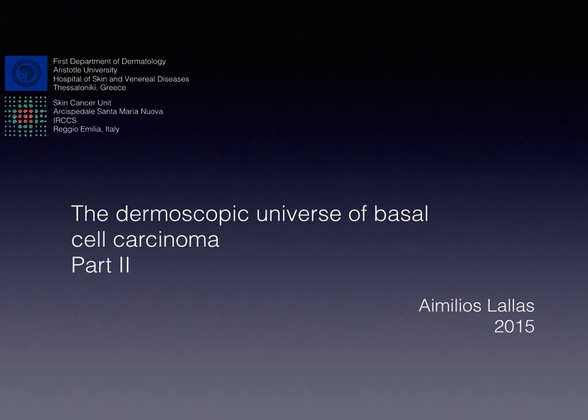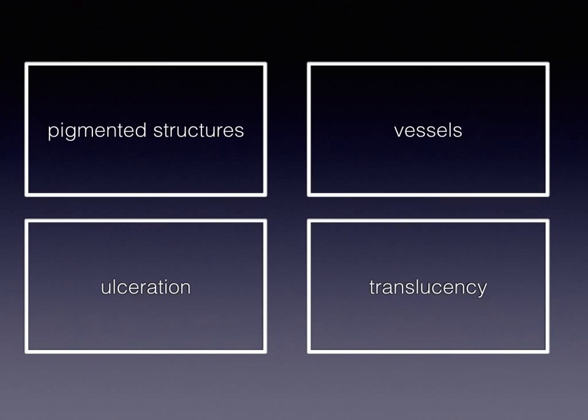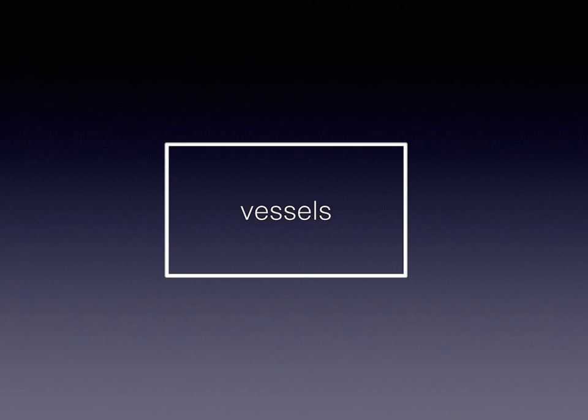Welcome to this podcast, which is the second of a series of podcasts about basal cell carcinoma. In the first podcast of this series, we described four main categories of BCC-related dermoscopic criteria and analyzed the pigmented structures. We proceed now with vessels, which are the most commonly seen dermoscopic structures of basal cell carcinoma.